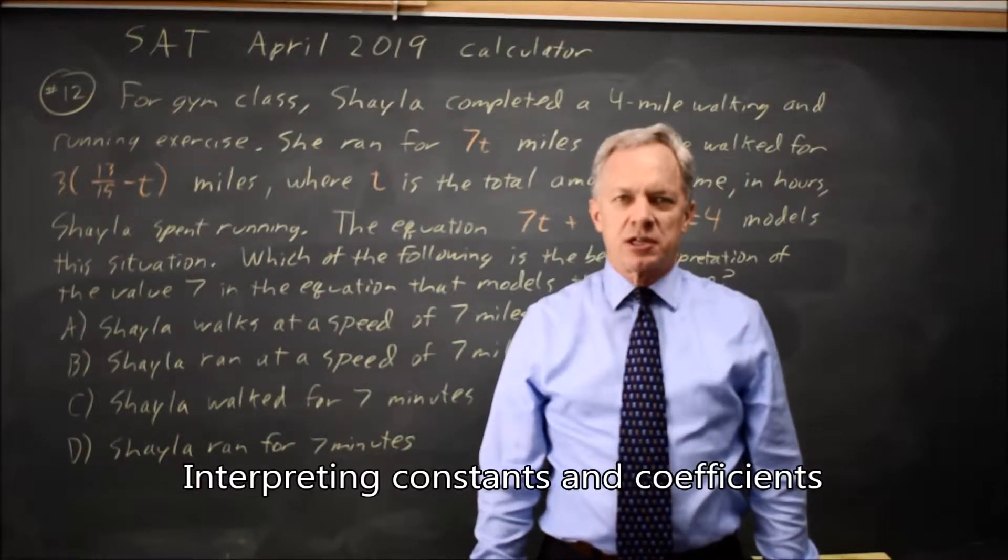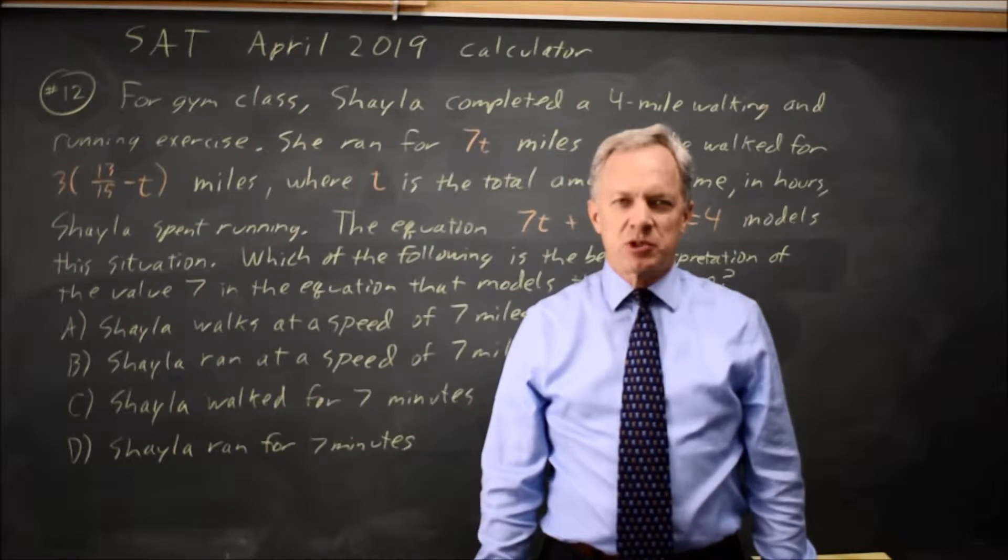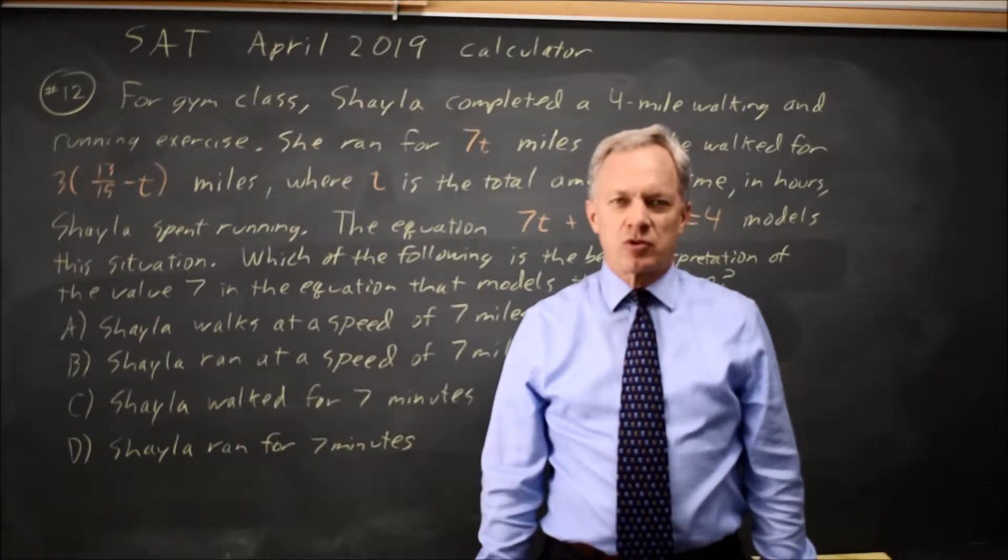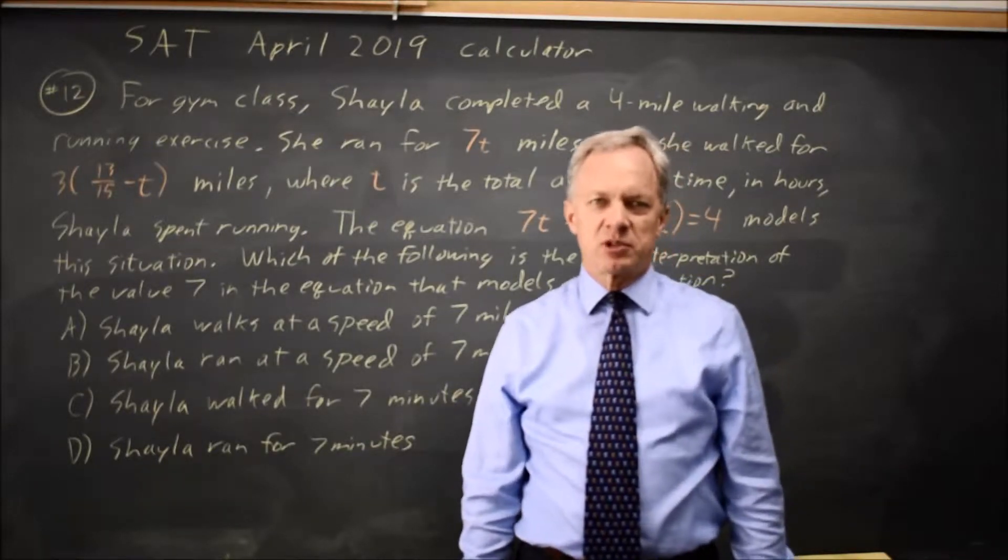This is calculator question number 7 from the April 2019 SAT. The College Board gives us an equation for Shayla's exercise in a paragraph describing this exercise, and they asked for the best interpretation of the number 7 here.